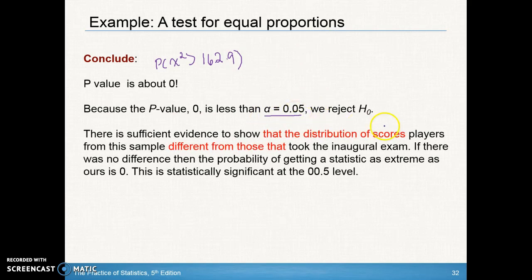So what does our conclusion look like? Because the p-value is zero, which is less than our alpha of 0.05, and even if it's not given, that's the one that we always assume to be true, we reject the null. So there's sufficient evidence to show that the distribution of scores of the original students is different from those that took the initial exam. Now notice your p-value. You have to state the null here. If there was no difference, then the probability of getting a statistic as extreme as ours is zero. This is statistically significant at the 0.05 level.